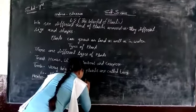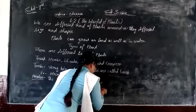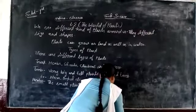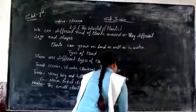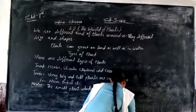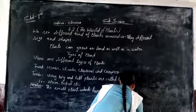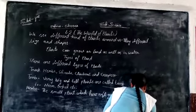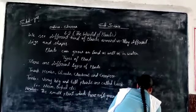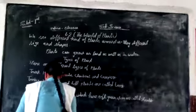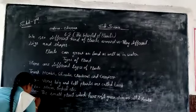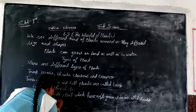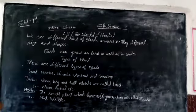Herbs have soft stems. Let's start with herbs. Herbs are small plants with soft green stems.